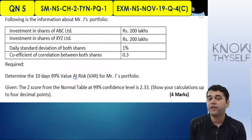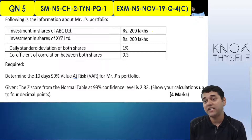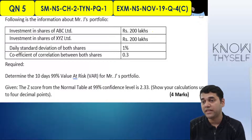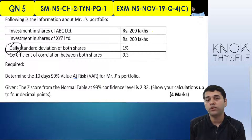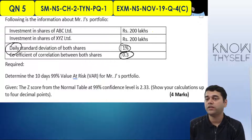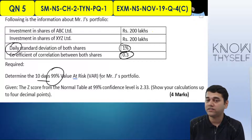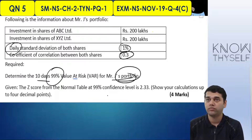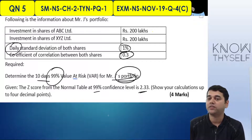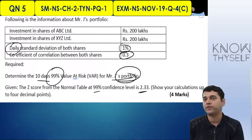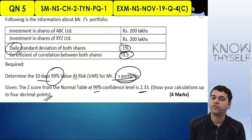Question number 5 — this is an examination question. Investment in shares of ABC is 200 lakh; investment in XYZ is 200 lakh. Daily standard deviation of both shares is 1%. Coefficient of correlation is 0.3. Required: determine 10-day, 99% value at risk of portfolio. Z-score from normal table is 2.33. Show calculations up to 4 decimal points — 4 marks.